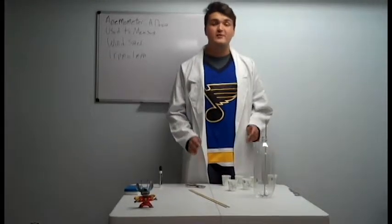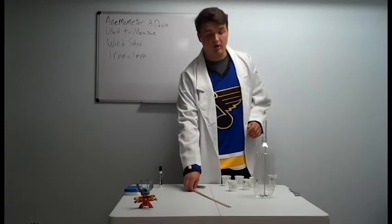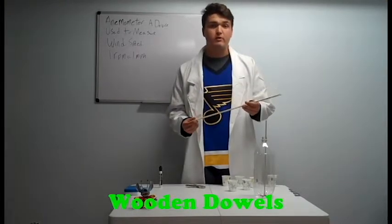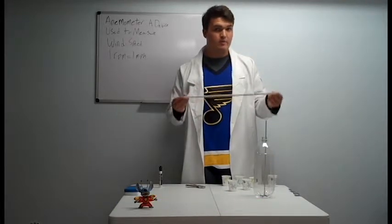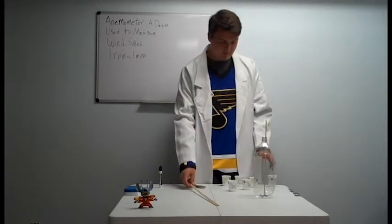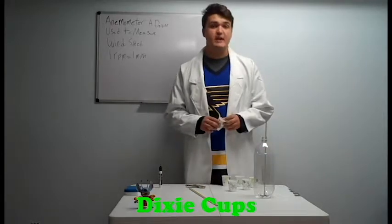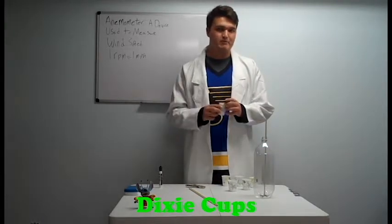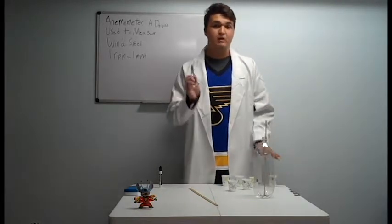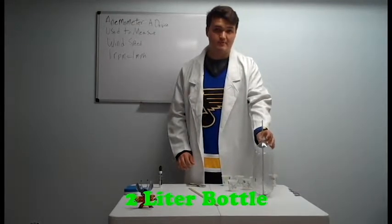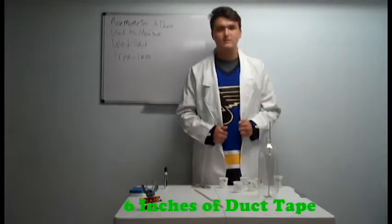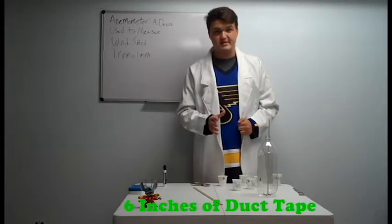Alright, so for today's experiment, the materials that you're going to need are three wooden dowels, the same length, and are slightly thicker and longer than barbecue skewers. You're going to need five Dixie cups, or those little drinking cups from your bathroom. You're going to need a hole punch, and you're going to need an empty two-liter soda bottle. You're also going to be needing tape for this experiment.